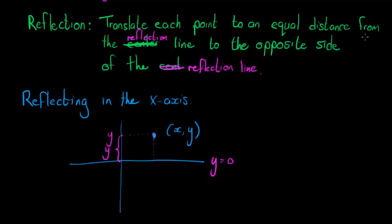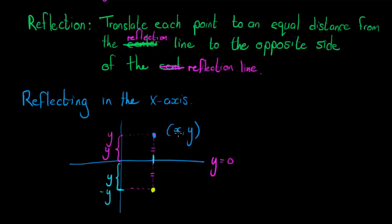I translate this point to an equal distance from the center line on the opposite side. So this length and that length are exactly the same. The image — shown in yellow — will have a y-reading that is also y, but measured in the negative direction, which means it will be negative y. The x coordinate doesn't change — we read the same x coordinate — so this new point is (x, −y).